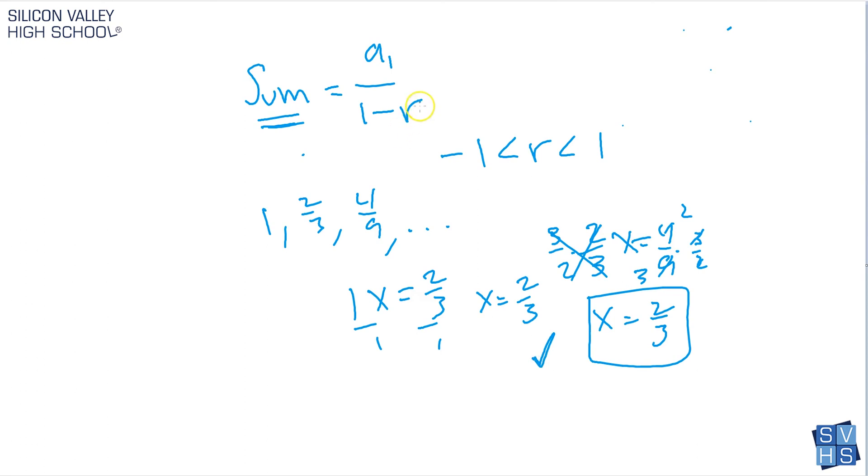So again, first find r and make sure it qualifies. Is it between negative 1 and 1? Once you have it, then that's cool. A to the 1 is really easy, and you do the math, and everybody's happy, and you're a big success with all your friends and family, and you're welcome. So that's it. That's how you do those. And hopefully you enjoyed the video.